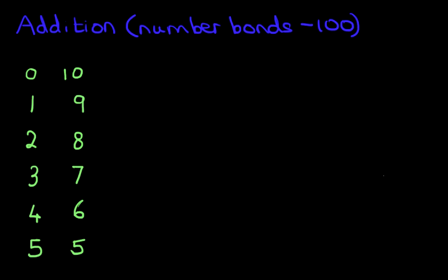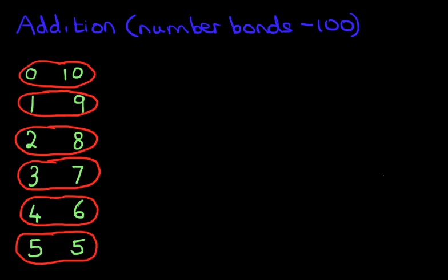Then we circled the sets of numbers: 0 and 10, 1 and 9, 2 and 8, 3 and 7, 4 and 6, and 5 and 5. Now, what did we notice about them? They all added to make 10. Those were the number bonds to 10.